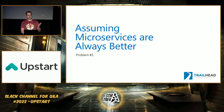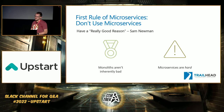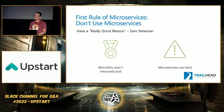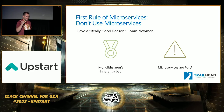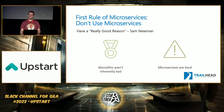Problem number one: assuming that microservices are always going to be better than a monolith. That's not really true. Sam Newman, one of the lead thinkers in the microservices space, says if you're going to build microservices, you should have a really good reason. Pump the brakes is my paraphrase. Keep in mind that monoliths aren't inherently bad, and that microservices are really hard to build well. If you don't have a really good reason, those two things alone should get you to think about whether you want to do a monolith instead.